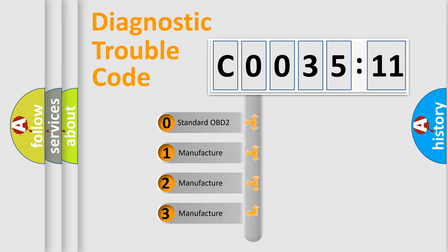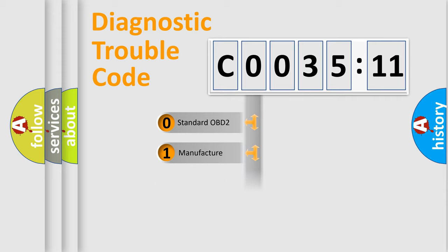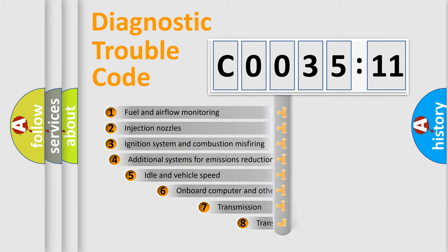If the second character is expressed as zero, it is a standardized error. In the case of numbers 1, 2, or 3, it is a manufacturer-specific expression of the car-specific error.